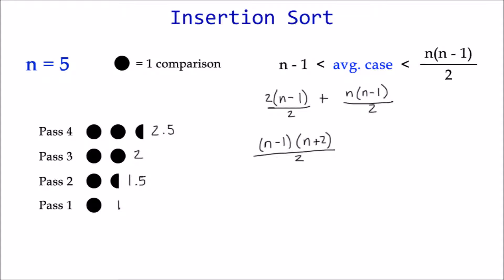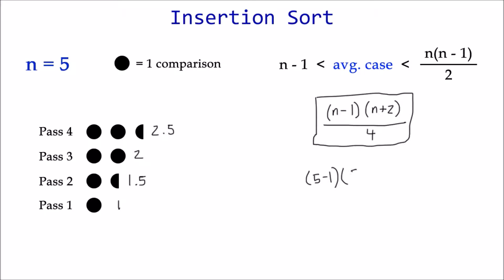If you're not familiar with factoring out a binomial, check out this simple 2-minute explanation video. The last step is dividing the whole thing by 2. And simplified, we get this. Let's try it out with our example of n equals 5 and see if we get 7 like before. 5 minus 1 times 5 plus 2 divided by 4. Then 4 times 7 divided by 4 equals 7. Perfect.